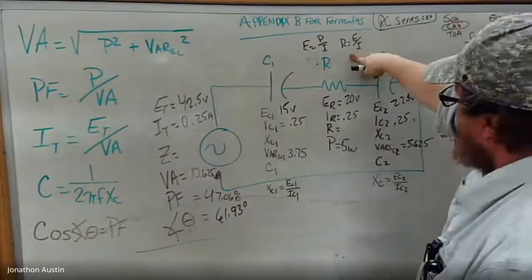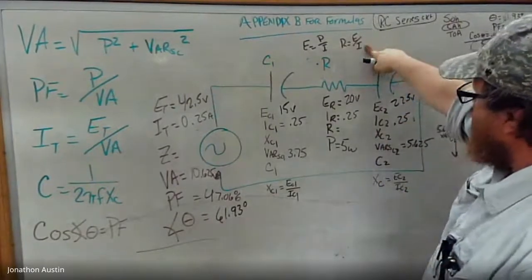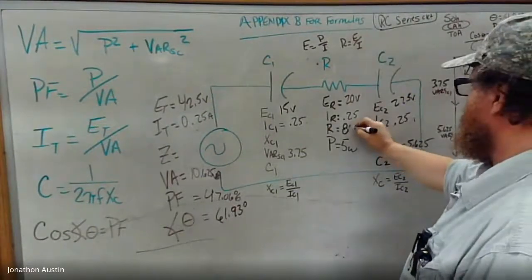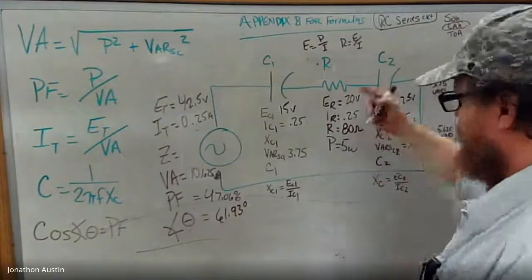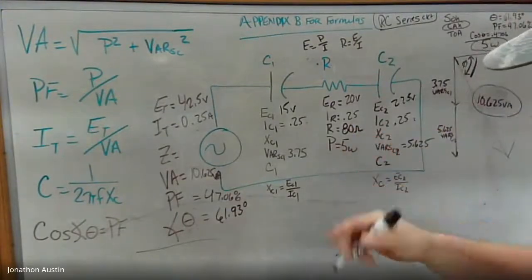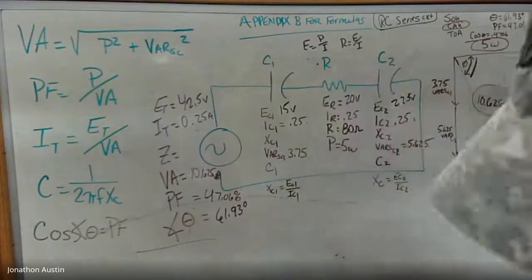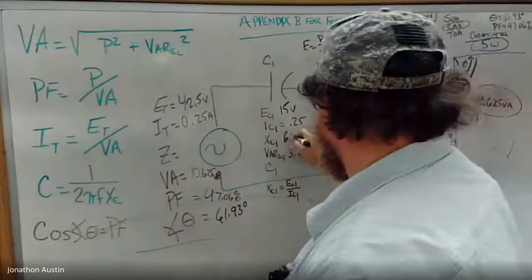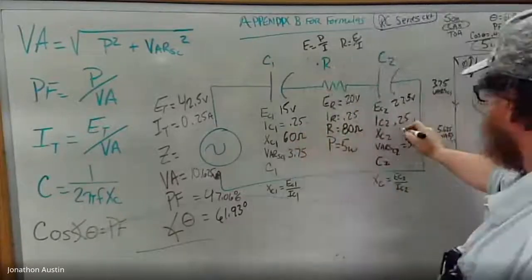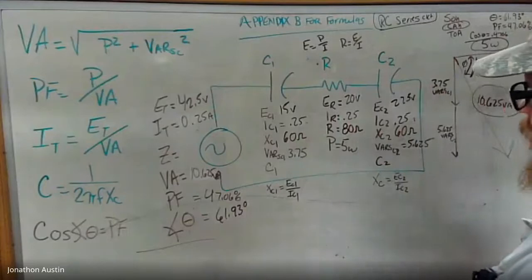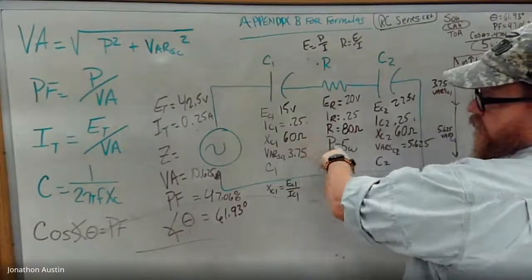Because now I can solve for R, right? E divided by I, and that should give me 80 ohms. It's easier to do because 20 divided by 1 fourth, you flip it and 4 times 20. And then we're going to get 60 ohms here, 60 ohms here.